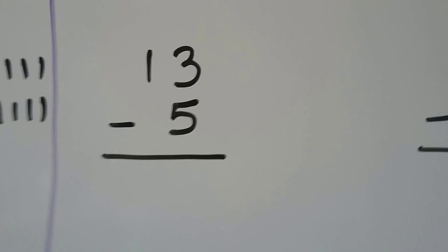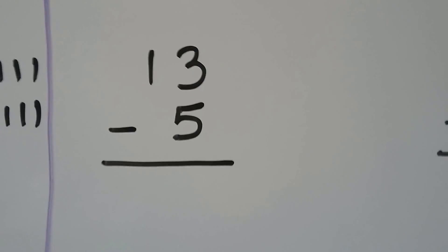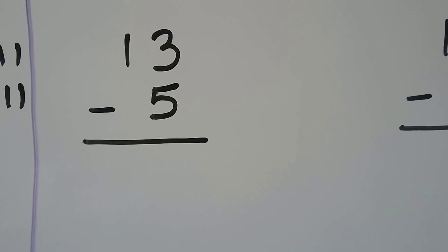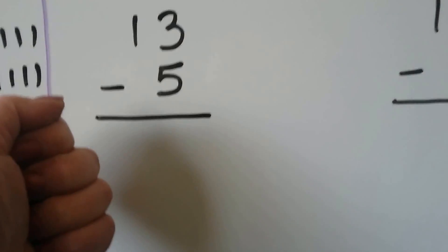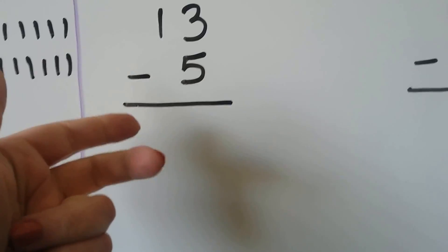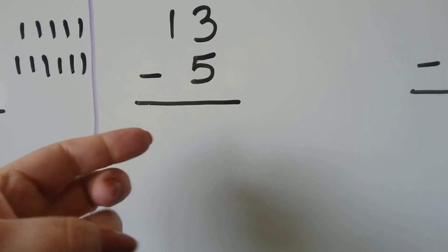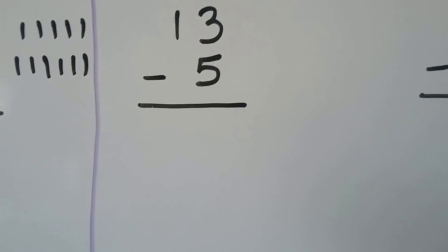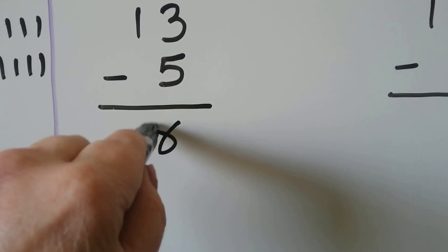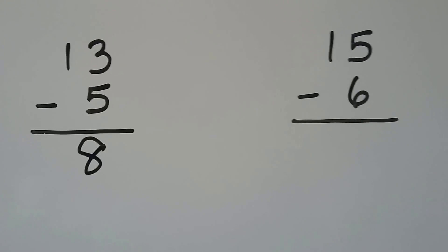13 minus 5. We can start at the 13 and count back 5: 13, 12, 11, 10, 9, 8, 7, 6, 5. That was 8 fingers. 13 minus 5 is equal to 8.